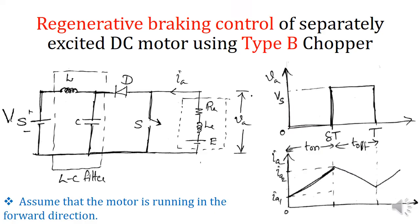Now we will discuss the practical circuit diagram and analyze the operation of this drive to understand how it provides regenerative braking control for the motor. In order to study the regenerative braking control, we first have to consider a motor which is running in the forward direction initially. Let us assume the motor under consideration is running in the forward direction — forward motoring — meaning it is in the first quadrant. We now have to bring that motor to the second quadrant.